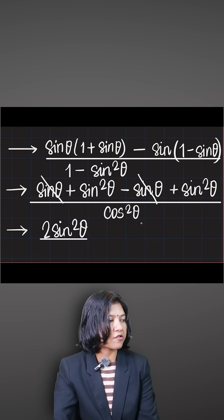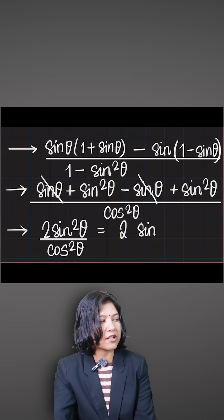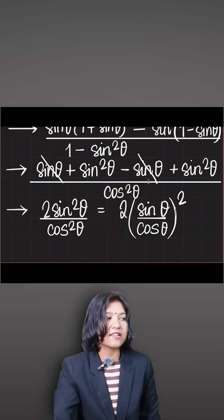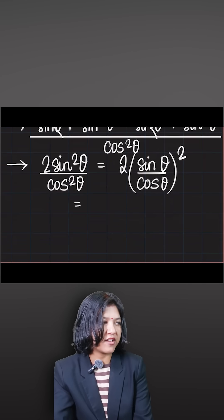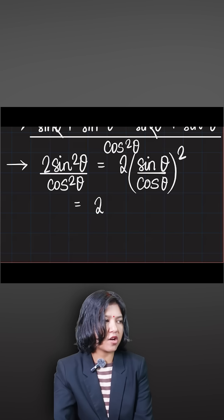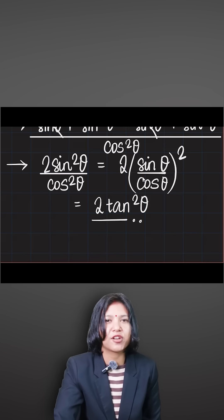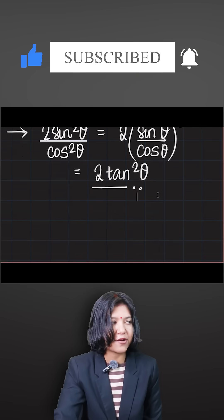You now have 2sin²θ divided by cos²θ. Both are squared, so you can write this as 2 × (sinθ/cosθ)². Since sinθ/cosθ = tanθ, the final result is 2tan²θ. That is how you evaluate or simplify trigonometric functions where fractions are involved — and that's it, we're done.